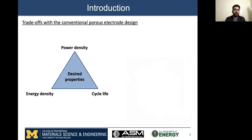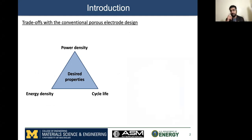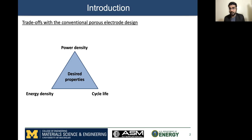So let's dive into it right away. If we consider the electric vehicle application, we want our lithium-ion batteries to have high energy density so that these batteries can be light in weight and compact in size. We also want our batteries to have high power density, meaning we want them to support fast charging, say 10 to 15 minutes charging.